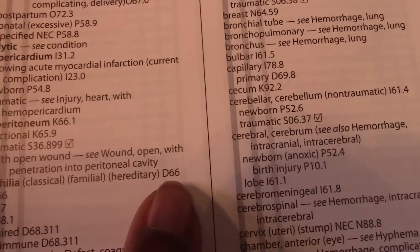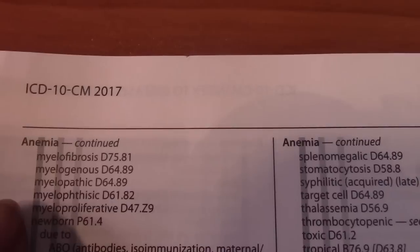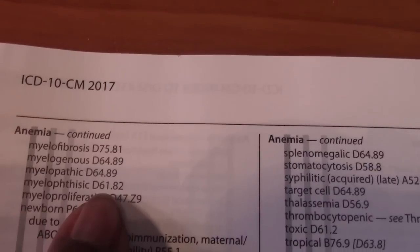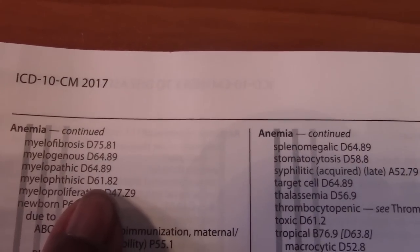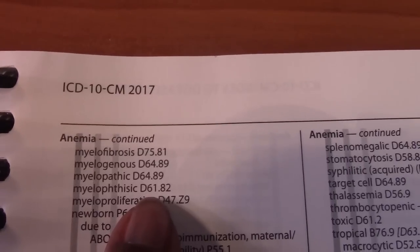Next we had myelophthisic anemia, which is a form of anemia. So I look at main term anemia, subterm myelophthisic — D61.82.